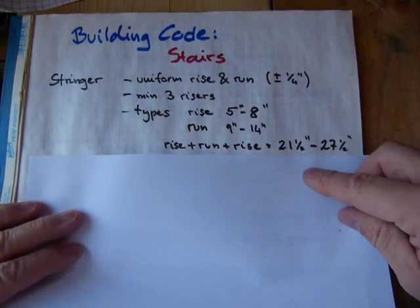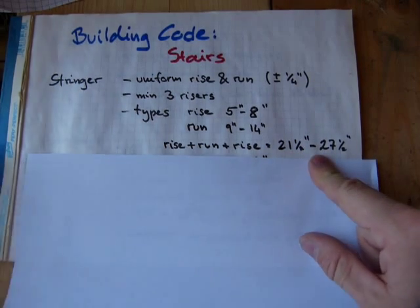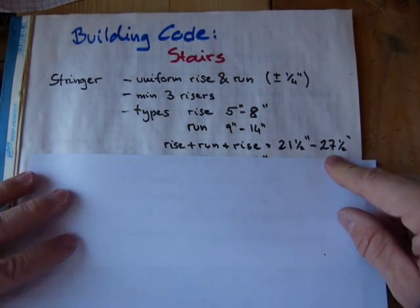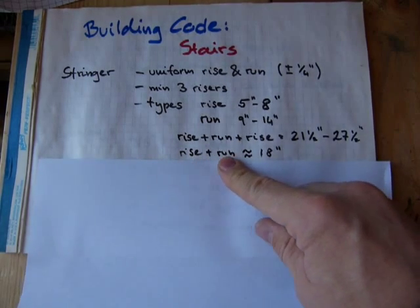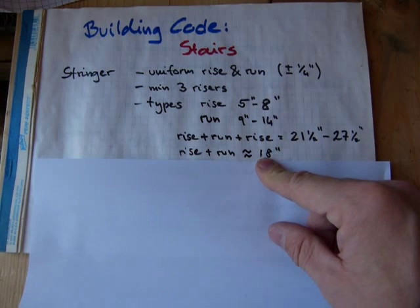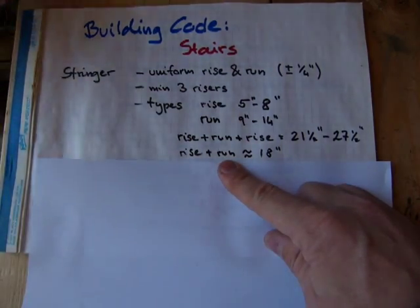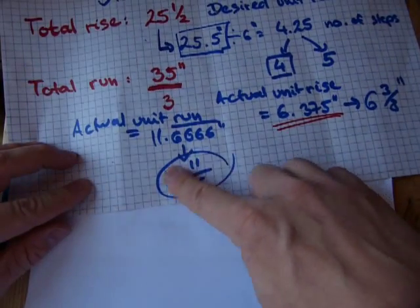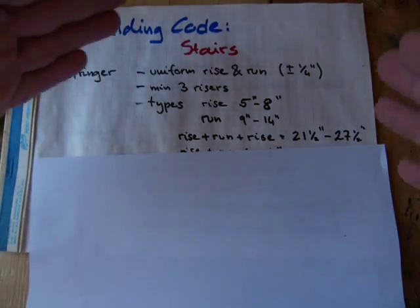You will see some kind of calculation in a building code that two rises plus one run have to have a sum or total of something like between 21.5 and 27.5 inches, something in that neighborhood. Or you might have seen this figure, that when you add the rise and the run, the golden rule or the golden ratio or the most comfortable ratio for most people is about 18 inches. In the stair calculation video, this one is about 6 inches, I'm rounding it down. This one is about 12 inches, I'm rounding it up. 6 plus 12 is 18, so we're fine that way.